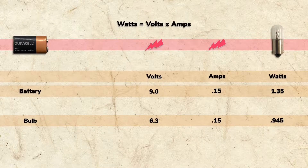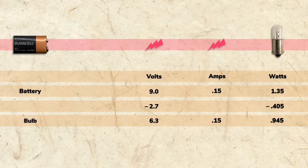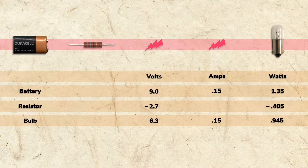So, if we want to use this battery with this bulb, we need to remove 2.7 volts and 0.405 watts. We can do this by adding a resistor. A resistor is an electrical component that creates resistance, and as we learned, resistance is measured in ohms.